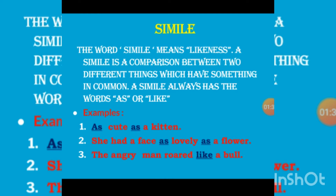So 'She had a face as lovely as a flower' is a comparison between two different things using 'as.' Third example: 'The angry man rode like a bull' — here 'like' is used to compare the man to a bull, so 'like' is the simile. A simile is a comparison between two different things which have something in common, and it always uses the words 'as' or 'like.'